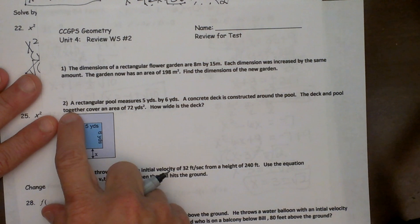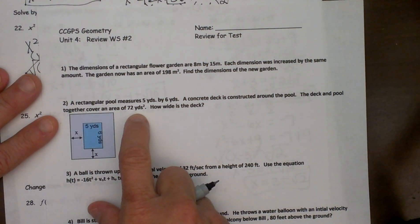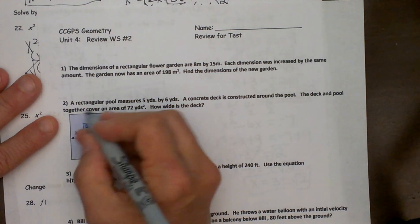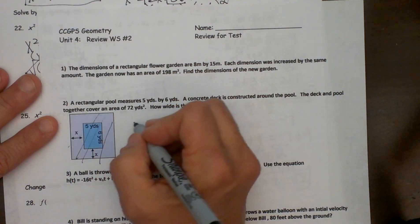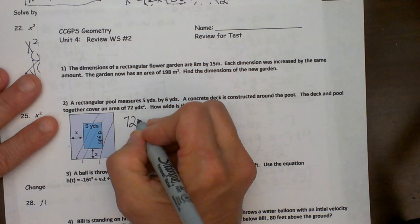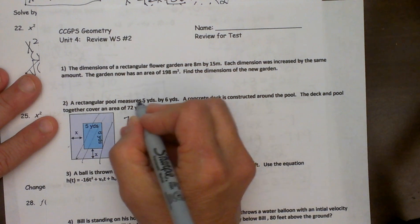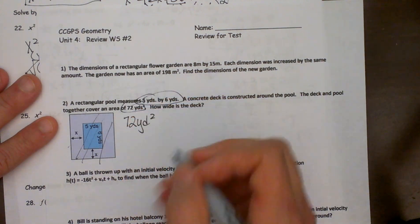The deck and the pool cover a total area of seventy two square yards. So the whole thing including the deck and the pool is seventy two square yards. That's important so is the five by six, I am going to circle that.